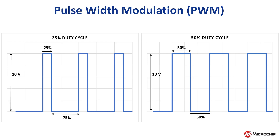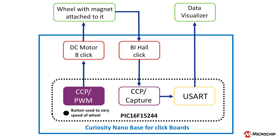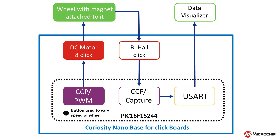In terms of motor control, by adjusting the duty cycle of the PWM, the speed of the wheel can be increased or decreased. The DC Motor 8-click is a DC motor driver which can drive simple brushed DC motors. These cannot be directly driven by the microcontroller since they require a certain amount of current and voltage. To vary the speed of the wheel, press the button on the Curiosity Nano. There are three different speeds pre-programmed, with the first speed being the slowest and the last speed being the fastest.